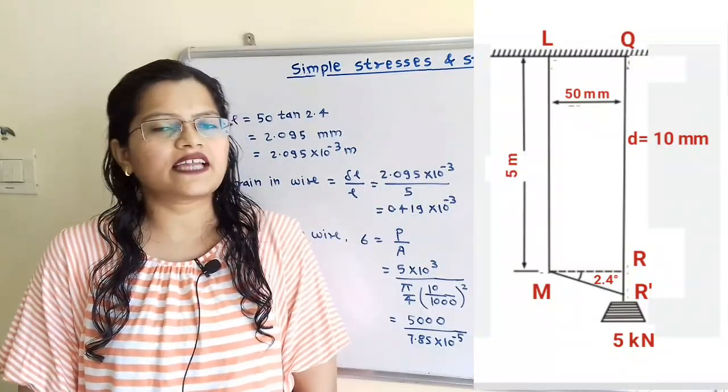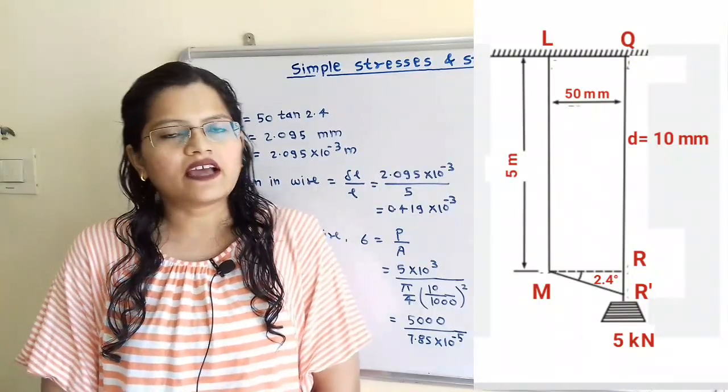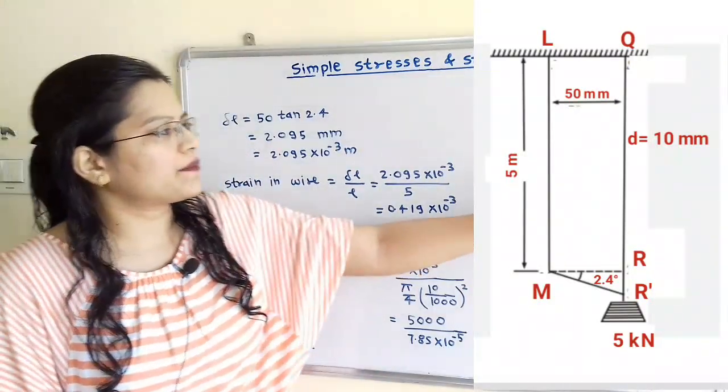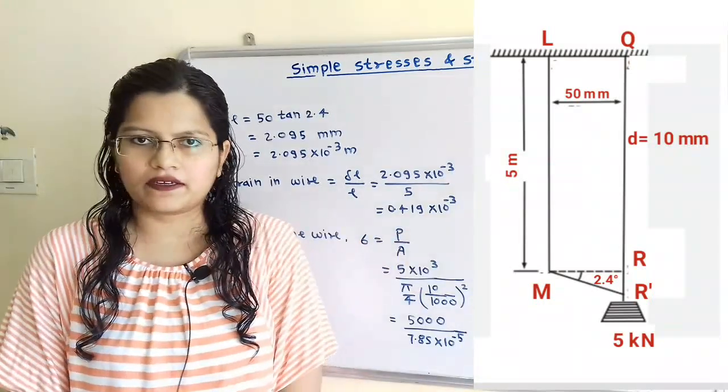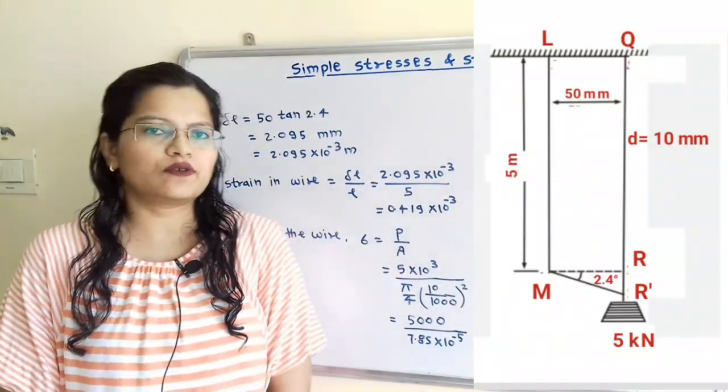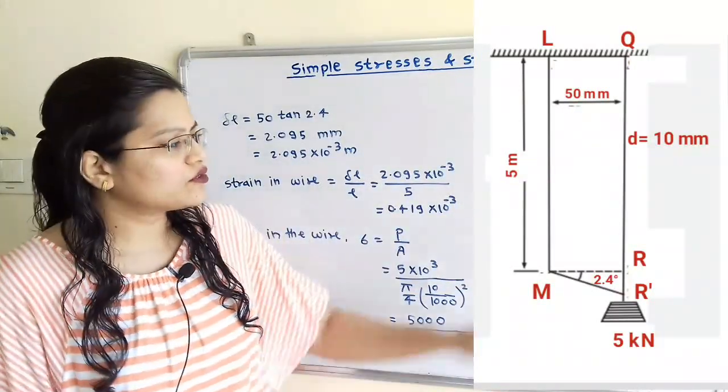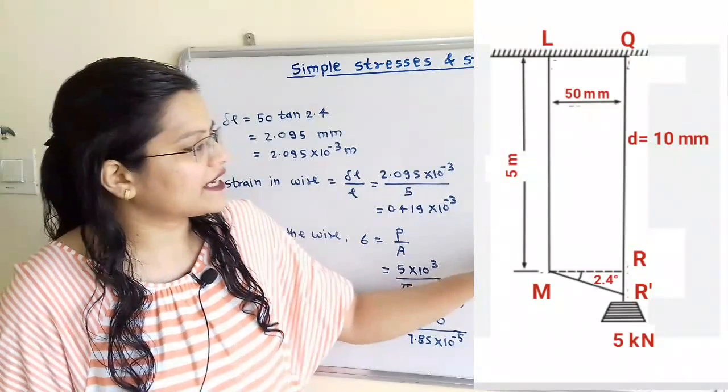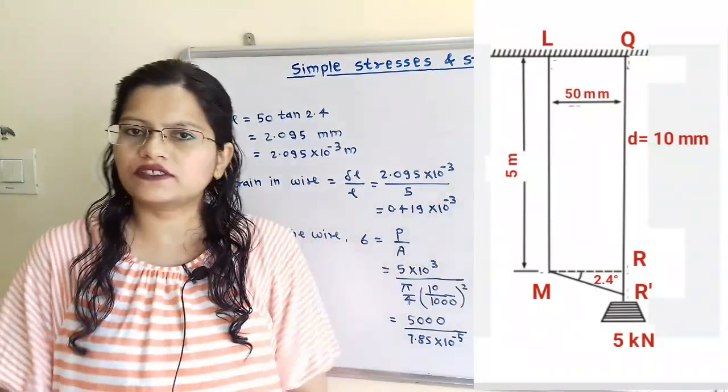Question. Let us understand the given question. There are two wires which are kept at 50 mm apart. Length of these two wires is 5 m and diameter is equal to 10 mm. Horizontal bar MR rests at the end of these two wires.